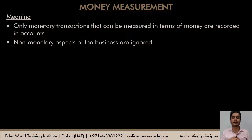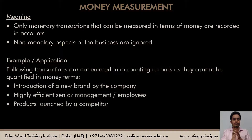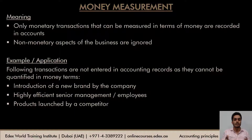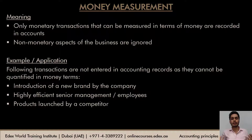Non-monetary transactions do not find any place in the accounting records. Examples include: introduction of a new brand by the company — which could change the future of the company — a business having very efficient management or employees, or a competitor launching a product that could affect our business. None of these are recorded in accounting records because you cannot state their money value.